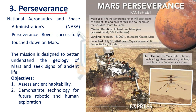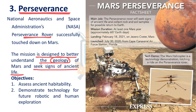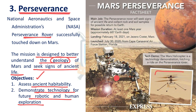Next is Perseverance — NASA's latest Mars mission. It has sent the Perseverance rover and Ingenuity helicopter. This mission is designed to better understand the geology of Mars and to seek signs of ancient life. Objectives include assessing the ancient habitability of Mars and demonstrating technology for future robotic and human exploration. Perseverance has made oxygen out of CO2 in the Martian atmosphere, and the Ingenuity helicopter has taken autonomous flight — two significant achievements of this mission.